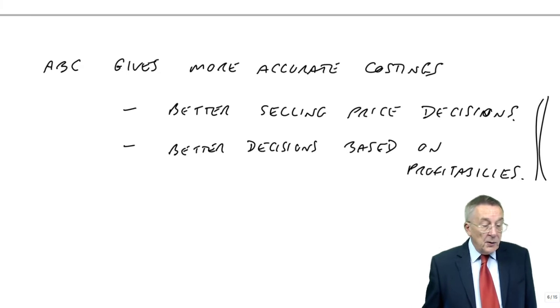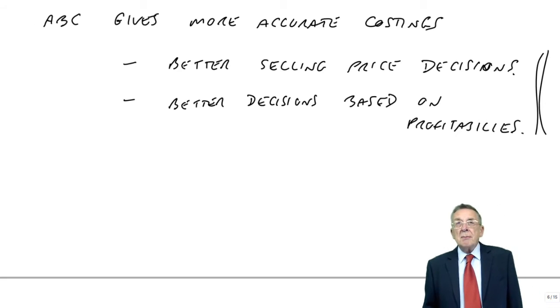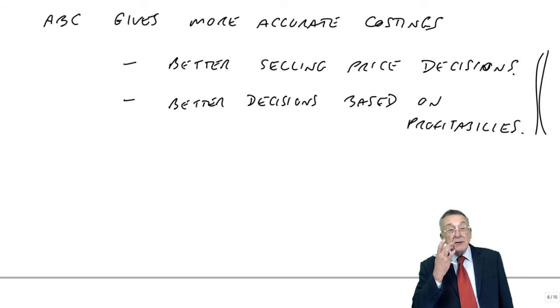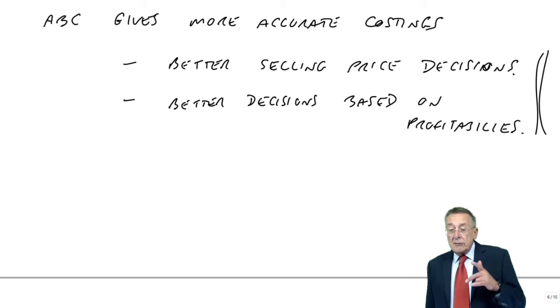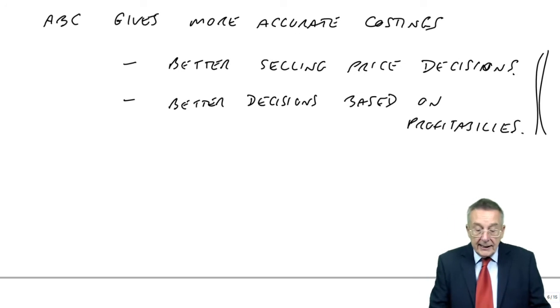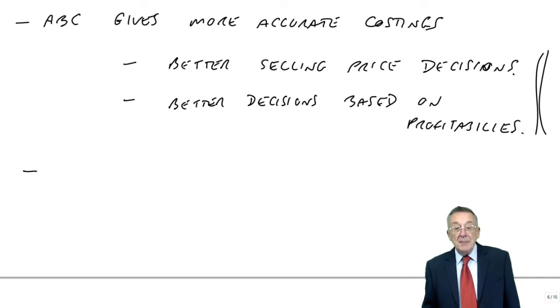it's because if we've got more accurate costings, the benefit of those two things there. The other big benefit or strength of activity-based, and the reason, in fact, that it was originally developed, I think it was Texas Instruments, who first started using this approach,